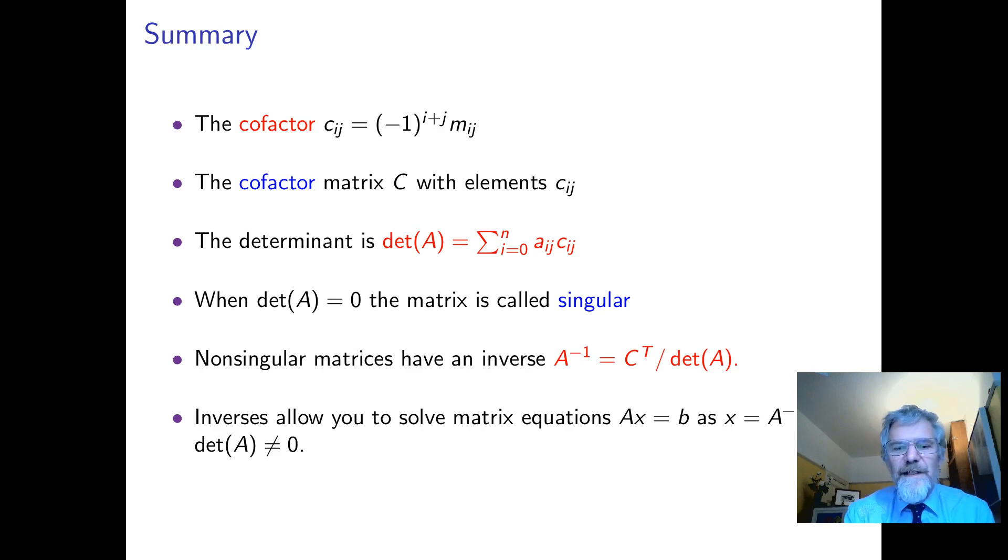When there is an inverse then you get that by taking the transpose of the cofactor matrix, and if you remember in the 2 by 2 case that actually puts the numbers on the off diagonal back where they were, and then you divide by the determinant. So actually if the matrix just got whole numbers in, it's when you divide by the determinant that you get fractions in it.